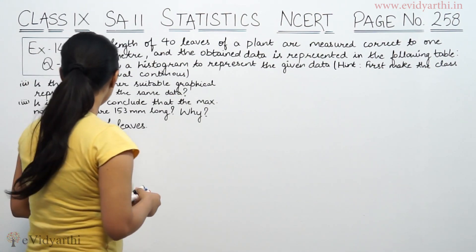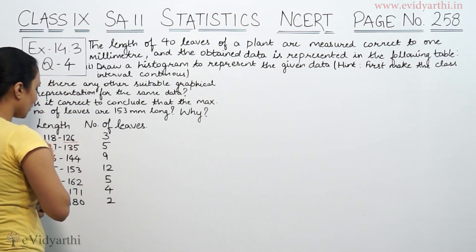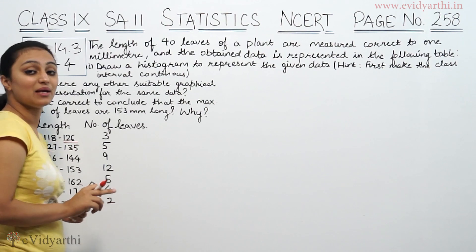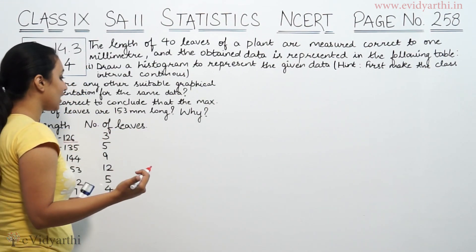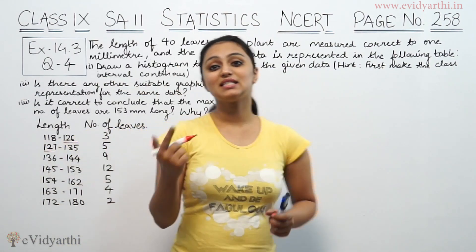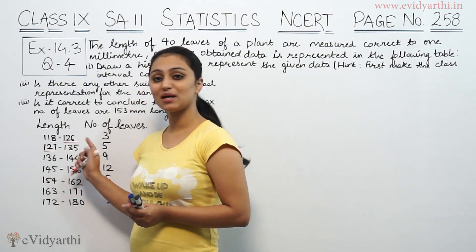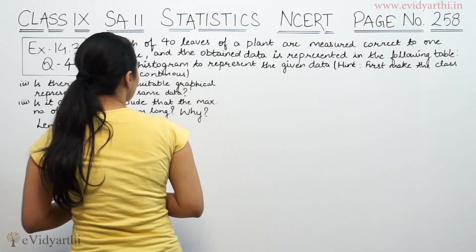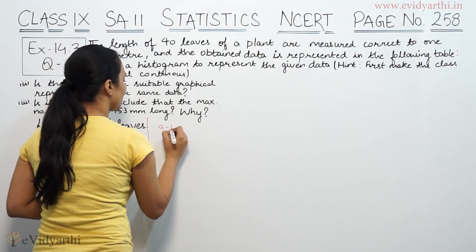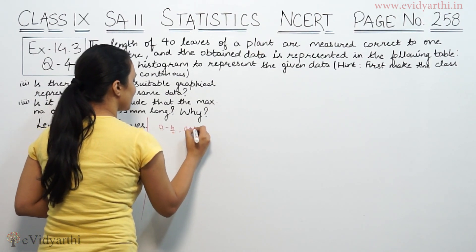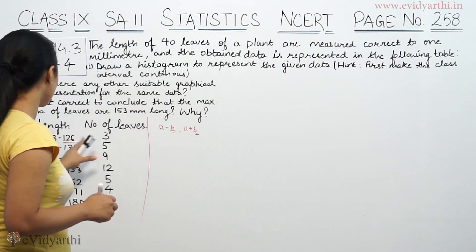We have to convert to true class limits. The difference between classes is 1. We will do h by 2, that means 1 by 2, which equals 0.5. So 0.5, the lower limit is minus and upper limit is plus. We will do a minus h by 2, a plus h by 2. Lower limit is minus and upper limit is plus. So h is 1.